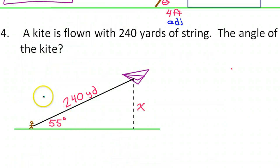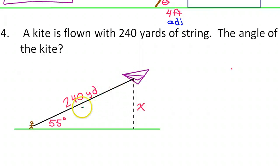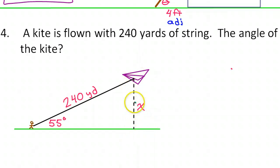Here's the situation: a kite is flown with 240 yards of string, the angle of elevation is 55 degrees, and we want to know how high off the ground is the kite — so that would be x right here.